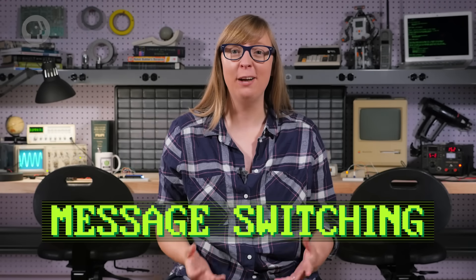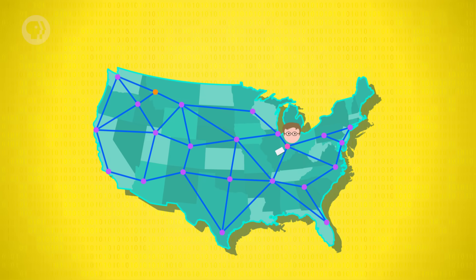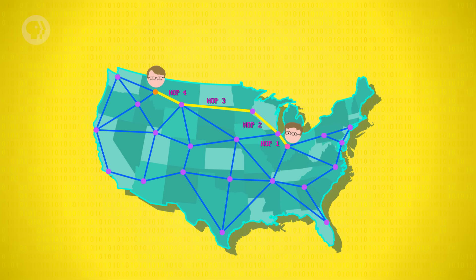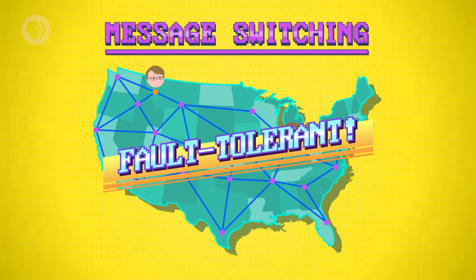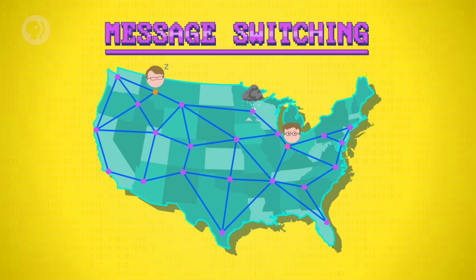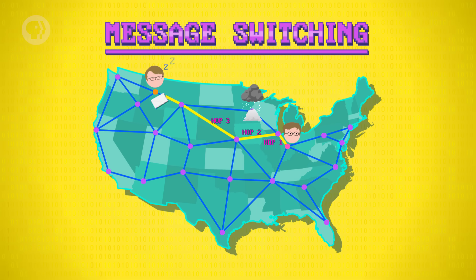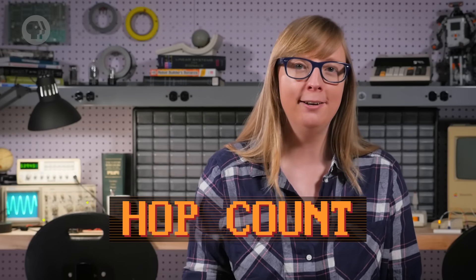Another approach for getting data from one place to another is message switching, which is sort of like how the postal system works. Instead of a dedicated route from A to B, messages are passed through several stops. So if John writes a letter to Hank, it might go from Indianapolis to Chicago, then hop to Minneapolis, then Billings, and then finally make it to Missoula. Each stop knows where to send it next, because they keep a table of where to pass letters given a destination address. What's neat about message switching is that it can use different routes, making communication more reliable and fault-tolerant. In this analogy, cities are acting like network routers. The number of hops a message takes along its route is called the hop count.